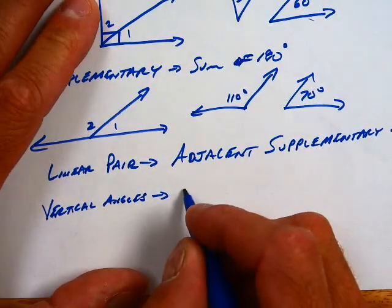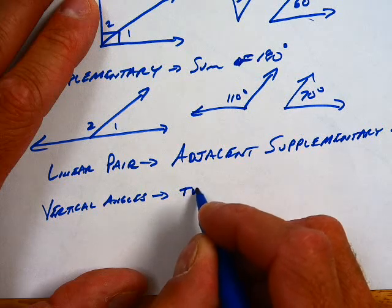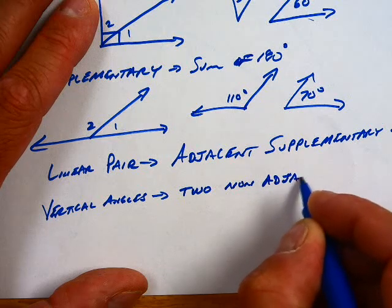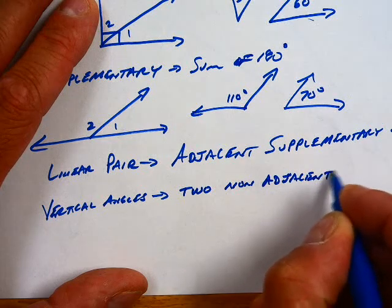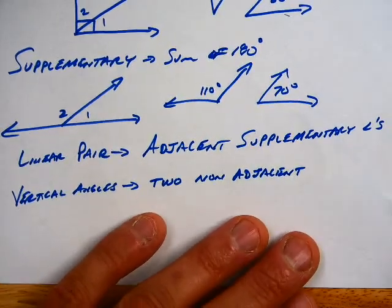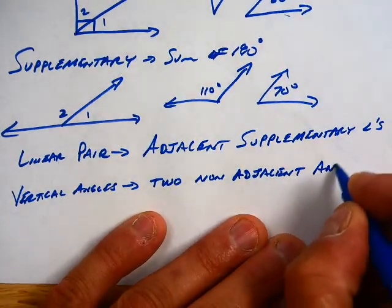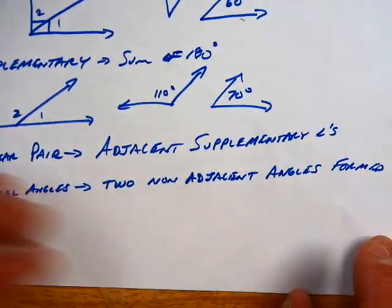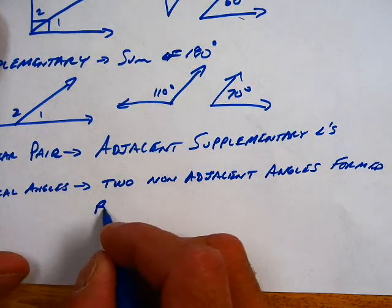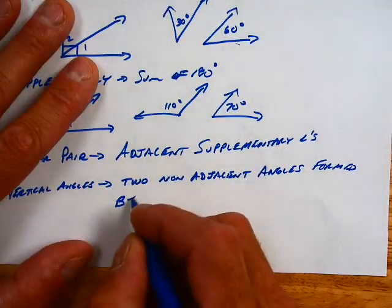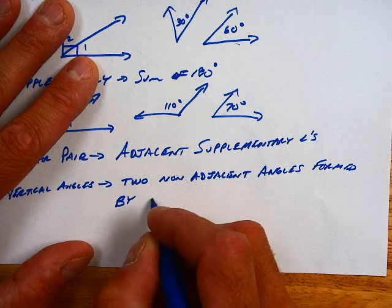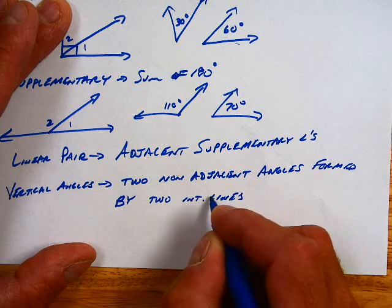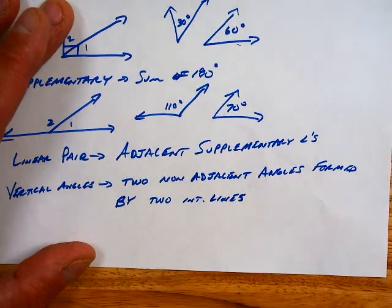Vertical angles are two non-adjacent. Now, this is going to sound goofy, but I'll do some examples afterwards. Two non-adjacent angles formed by... I'm going to zoom out here. By two intersecting lines.